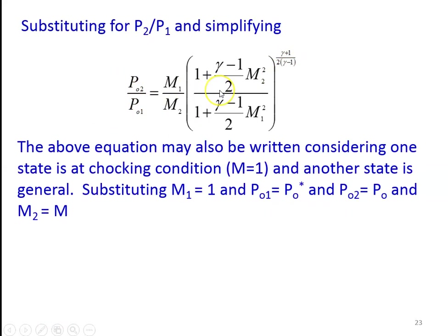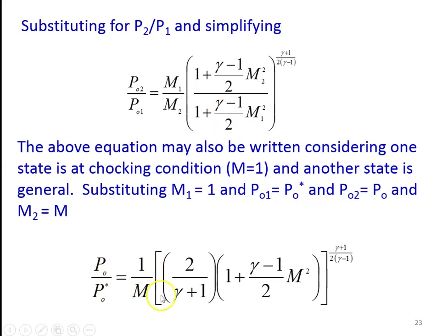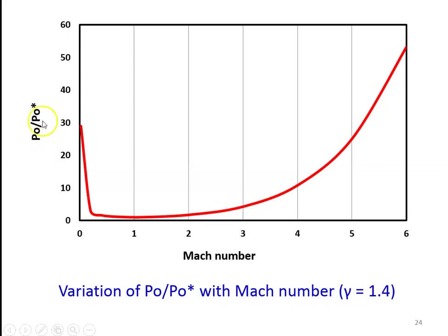This equation is rewritten for the choking condition. For choking condition, M = 1. We substitute M1 = 1, so P₀1 becomes P₀*. Taking P₀2 = P₀ and M2 = M, the equation becomes P₀/P₀* = (1/M) × [2/(γ+1) × (1 + (γ−1)/2 × M²)]^((γ+1)/(2(γ−1))). We calculate P₀/P₀* for different Mach numbers and represent graphically. For γ = 1.4, this shows how stagnation pressure changes for Mach number from 0 to 6.